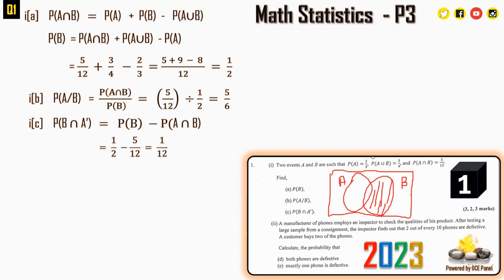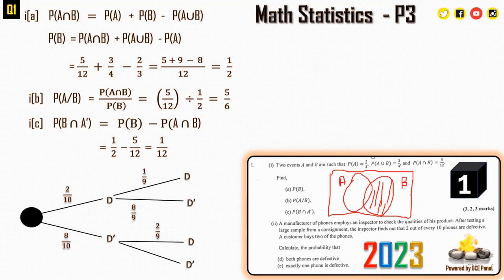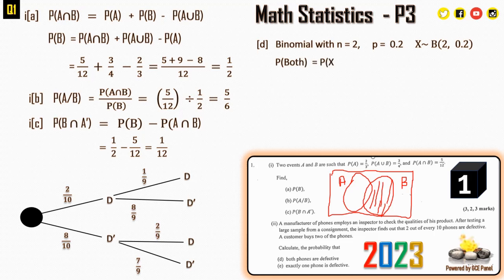Sub-question 2: A manufacturer finds that 2 out of every 10 phones are defective. A customer buys two phones. This is a binomial situation where the probability of a defective phone is 0.2 and n = 2, so X ~ B(2, 0.2).